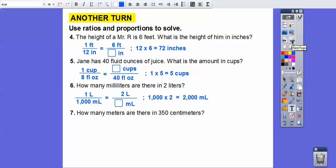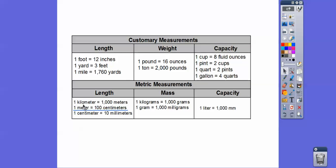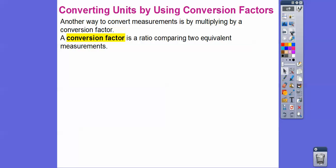How many meters are there in 350 centimeters? We use the conversion one meter to 100 centimeters. One meter to 100 centimeters equals how many meters to 350 centimeters. We multiply by 3.5, giving us 3.5 meters.